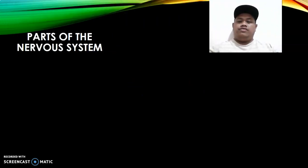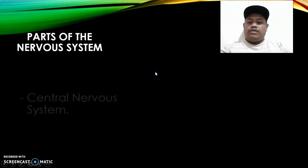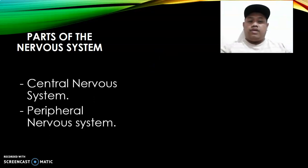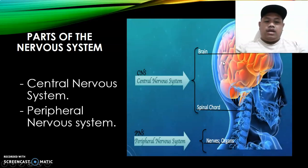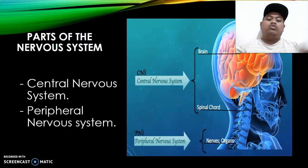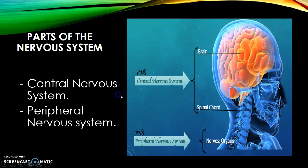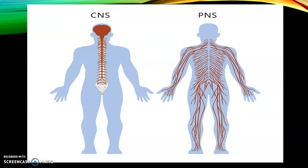When talking about the nervous system, there are several parts. The first is your central nervous system (CNS) and the second is your peripheral nervous system (PNS). The CNS is comprised of your brain and spinal cord. The peripheral nervous system consists of the nerves outside, moving outward from the spinal cord or brain. The CNS is on the left side of the screen — brain and spinal cord — while the peripheral nervous system represents the nerves all throughout our body.